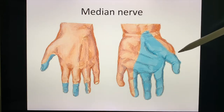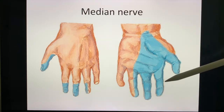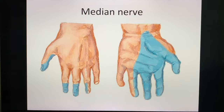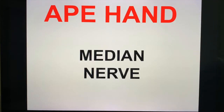This is the median nerve distribution. It starts from the thumb (finger number one), the index finger, the middle finger, and half of the ring finger. The ape hand (APAN) is the physical exam finding when you have median nerve injury. The median nerve supplies the thenar eminence, and atrophy of the thenar eminence gives you the ape hand.